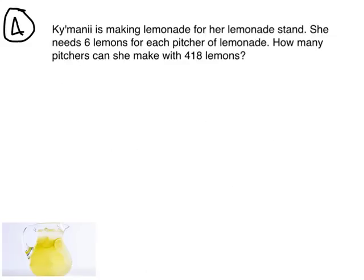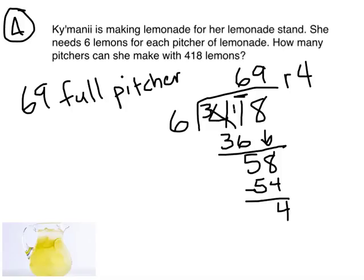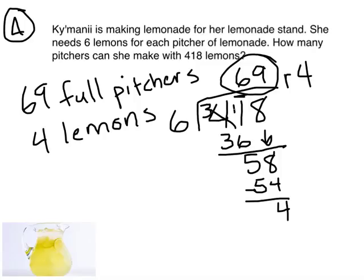Let's try another. Kimani is making lemonade for her lemonade stand. She needs six lemons for each pitcher of lemonade. How many pitchers can she make with four hundred eighteen lemons? So we're splitting four hundred eighteen lemons into groups of six lemons. Go ahead and solve that division problem now. The answer to the division problem is sixty-nine, remainder four. Kimani can make sixty-nine full pitchers of lemonade with four lemons left over. The answer is sixty-nine — we would keep the quotient.